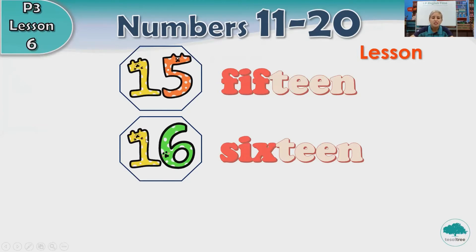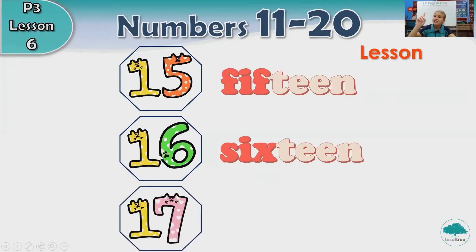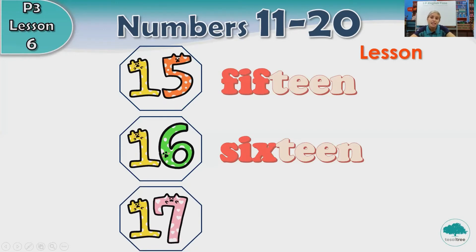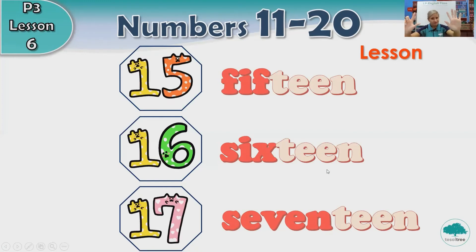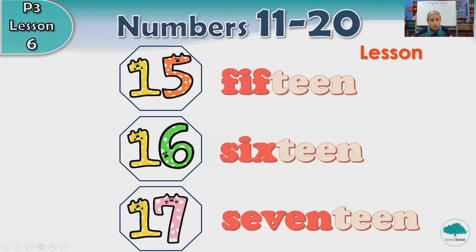After 16, we have number 17. Very good. How do we spell 17? It's easy. S-E-V-E-N-T-E-E-N. Number 7, and we add teen at the end.